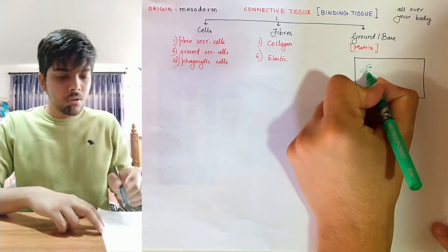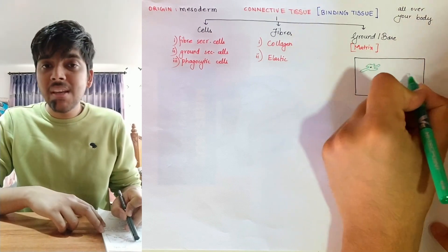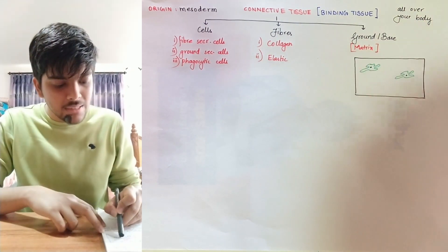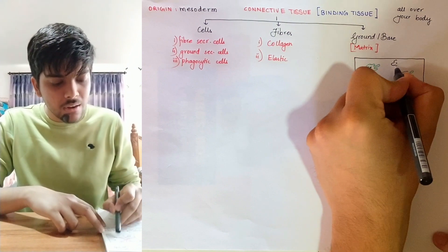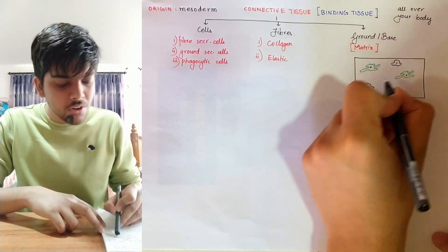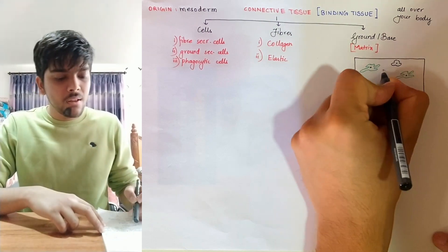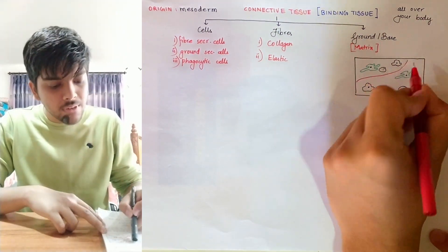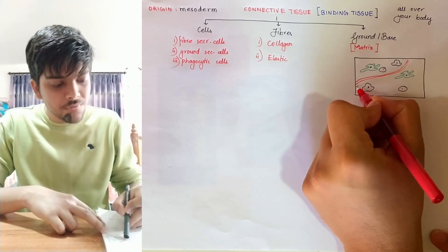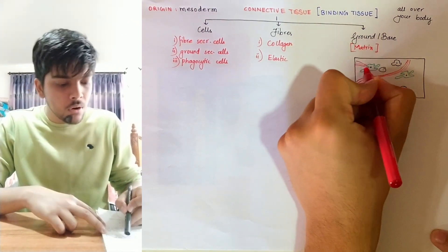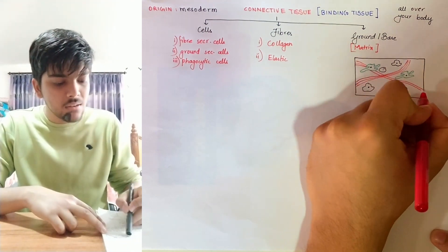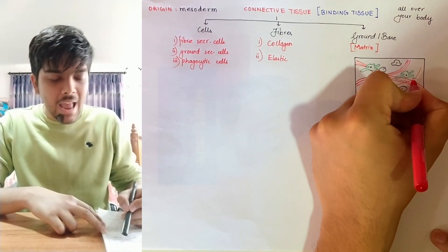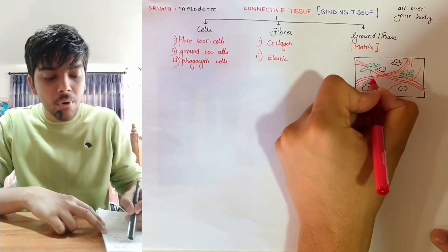The ground of connective tissue is known as matrix. Let's look at a diagram showing a typical connective tissue with its typical features. There are various types of cells present — cells that make fibers, cells there for protection, and cells that are secretory in function. There are also fibers secreted by the fiber-secreting cells, made up of either collagen or elastin. Both cells and fibers lie upon a matrix.